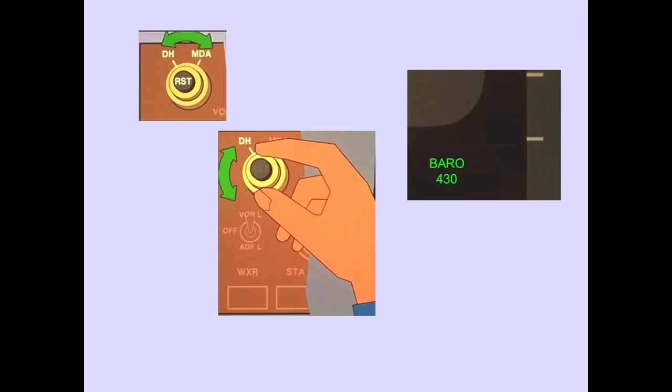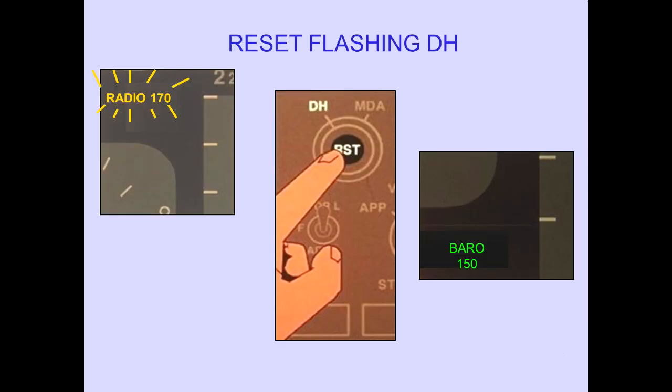Rotating the outer selector selects decision height or minimum descent altitude. Pushing the reset switch resets the flashing DH — the display returns to normal. There is no MDA alert.